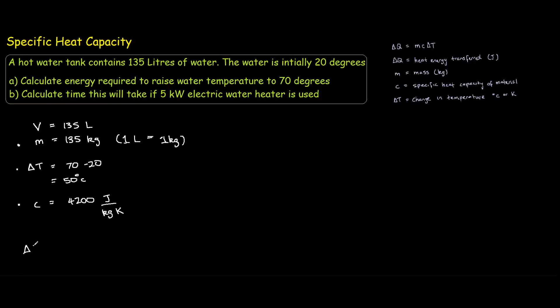So ΔQ equals to MC ΔT, so M is 135 kilos, C is 4200, and ΔT is 50 degrees. If you work this out, you will get 28,350,000 joules, or we can simplify this down to about 28 million joules.